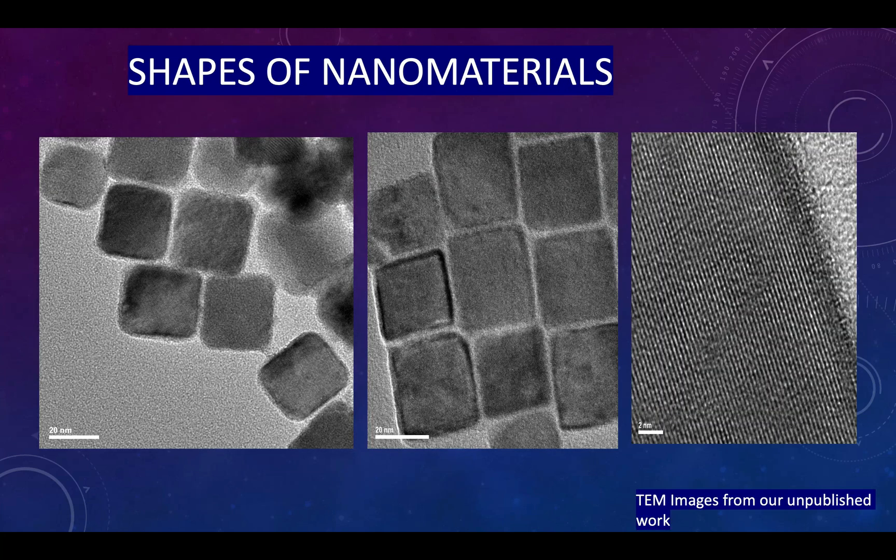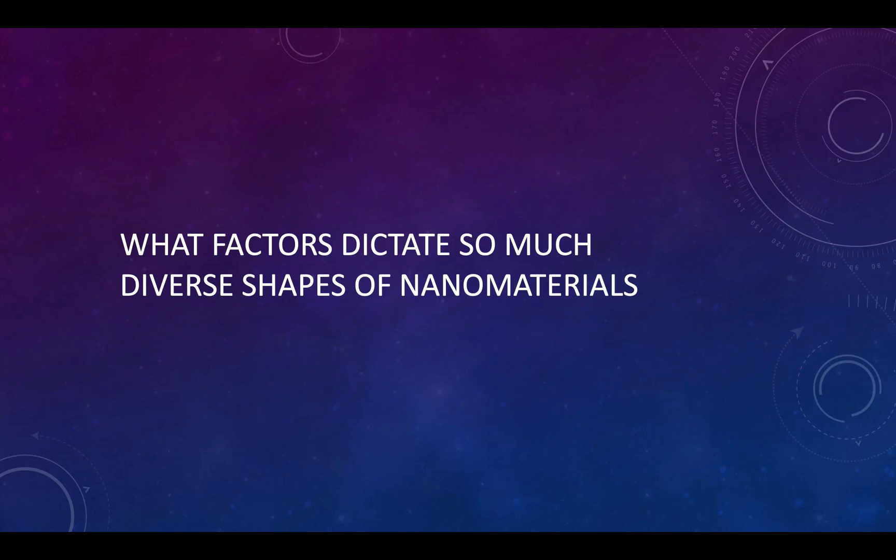These are some more images from STEM microscopy. Most of the material shown is lead sulfide and lead selenide. One of the most common questions students ask is: how can we achieve a desired shape? For example, if we want to make silver rods, how do we do that?